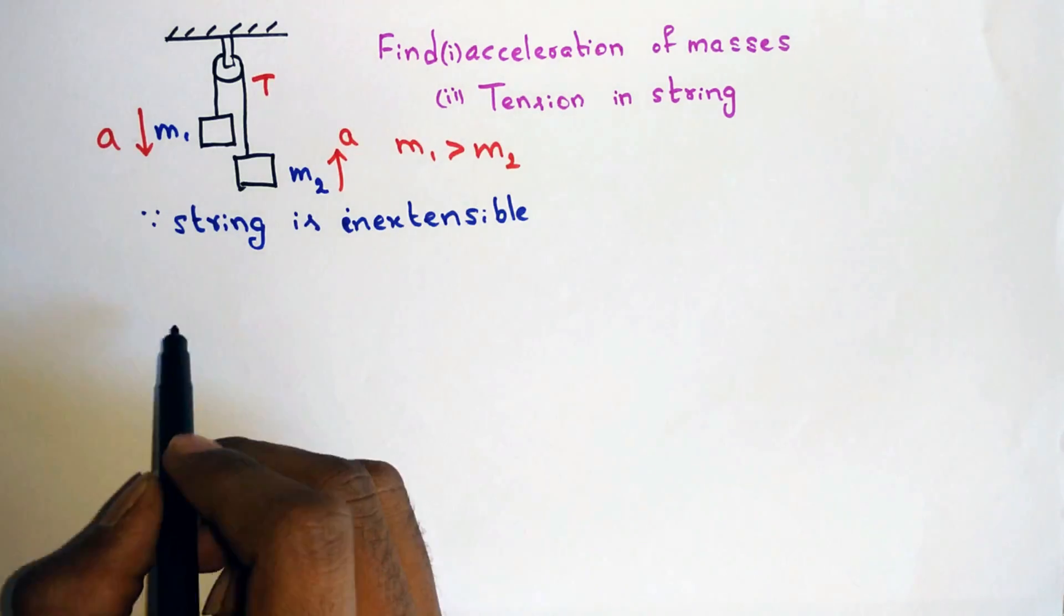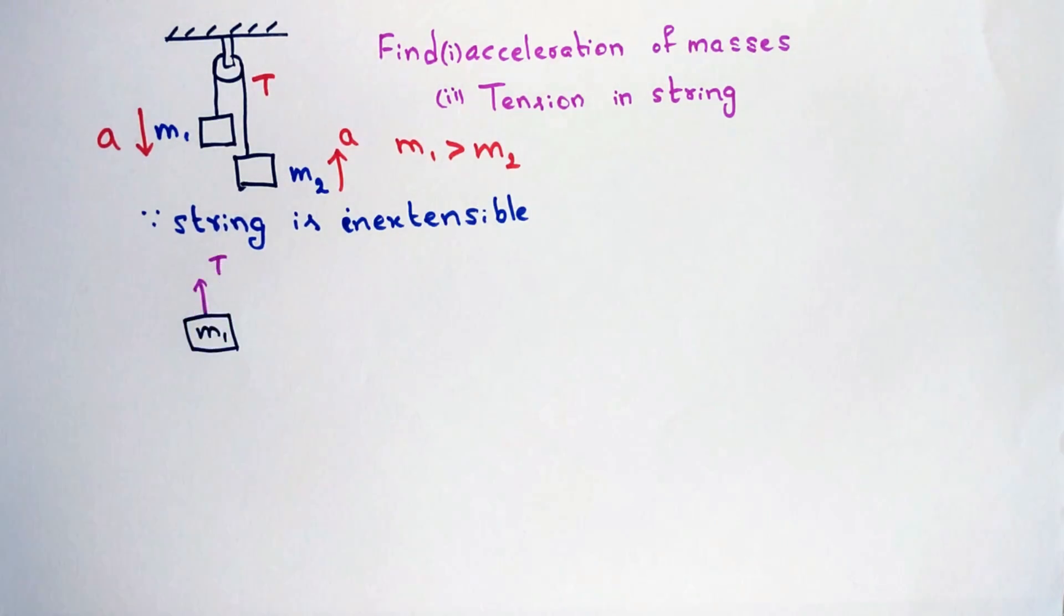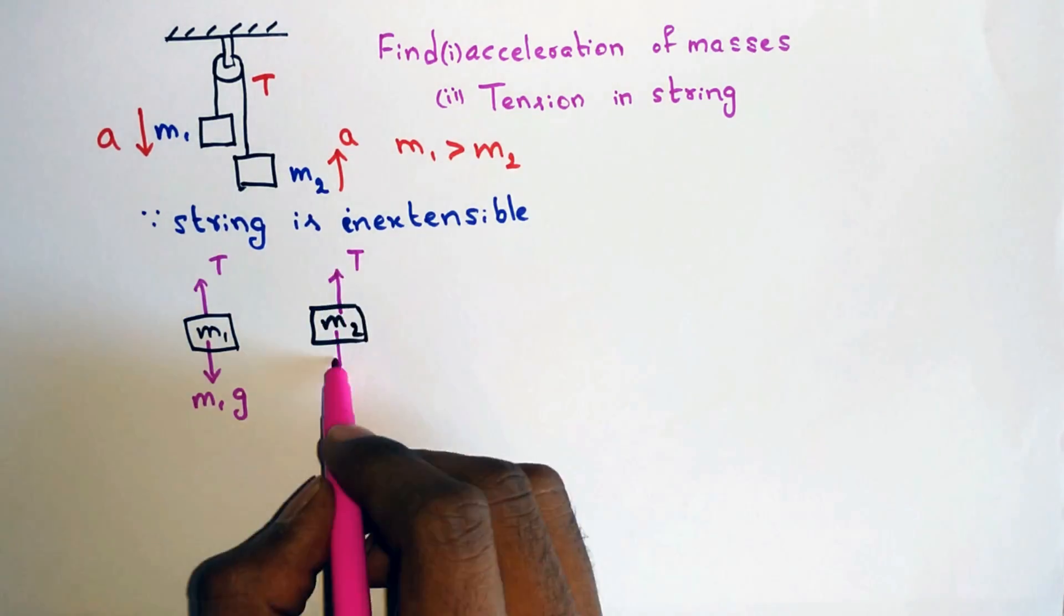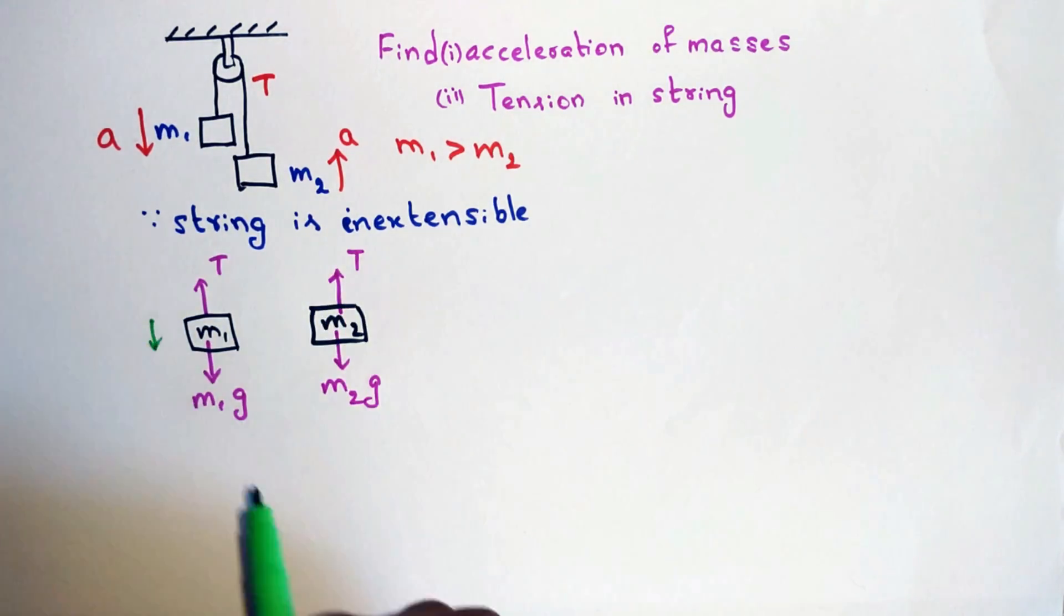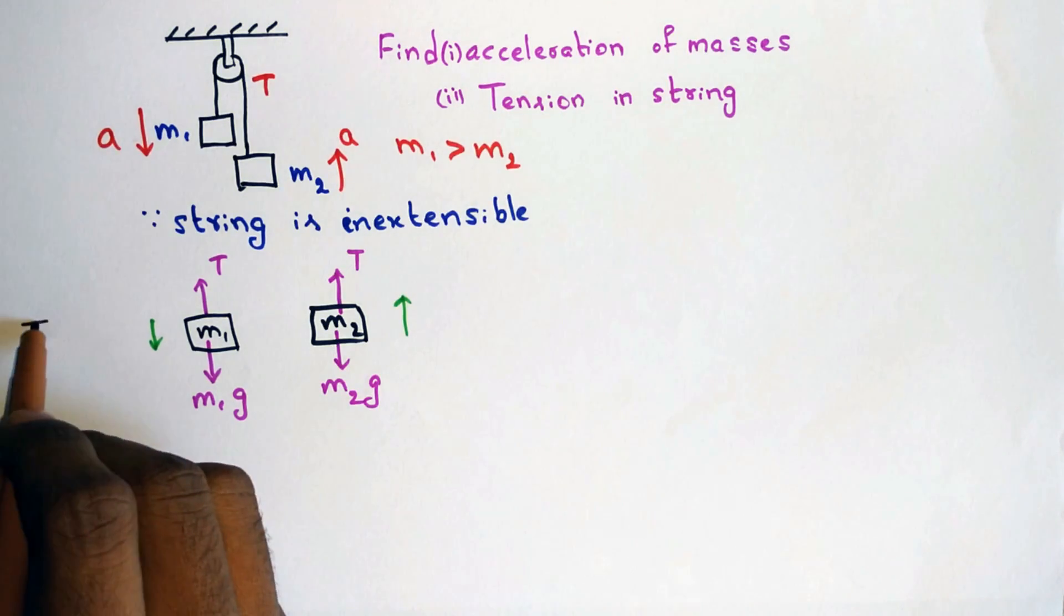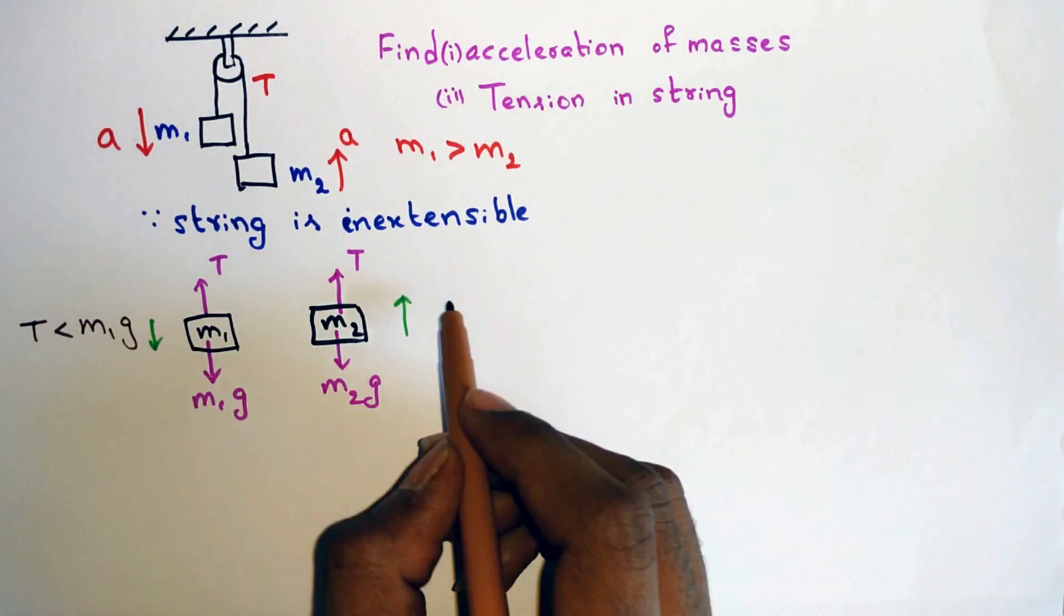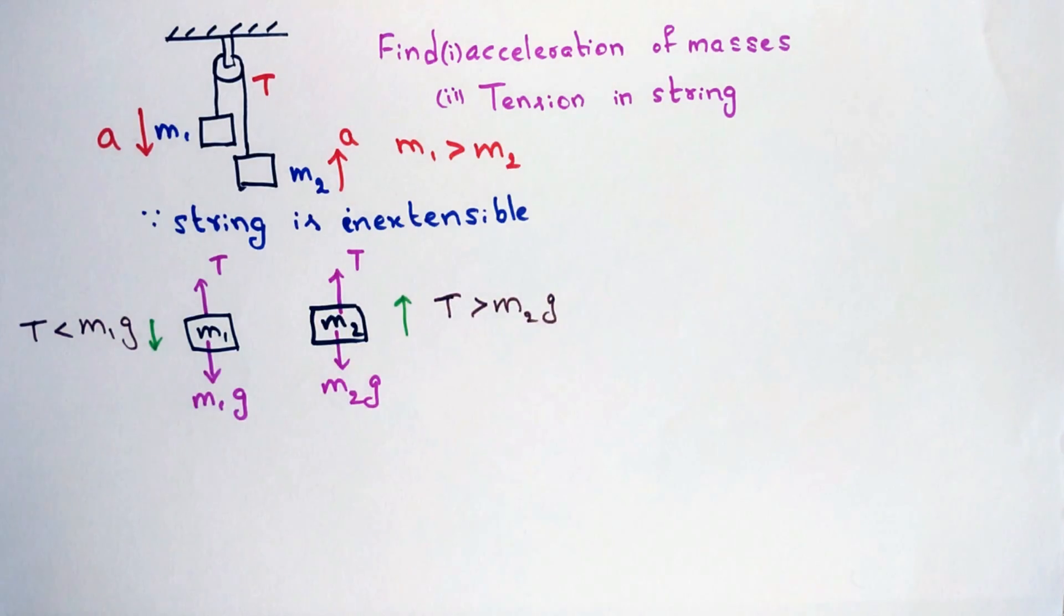So now let's consider the free body diagram of mass m1 then the tension and the weight are acting on it, and similarly for m2 also. We know that m1 moves down and m2 moves up with same acceleration a. Thus it is clear that m1g is greater than tension T and the tension T is greater than m2g.